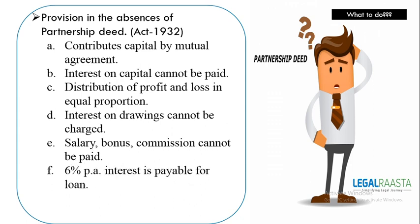The next point is that interest on loans is paid at 6%. One important thing to remember: if any partner gives a loan to the firm, interest is payable at 6% per annum. If a partnership deed had been prepared and the rate mentioned therein, interest would be paid accordingly. But if there is no partnership deed, interest on loan will be paid at 6% by mutual consent.